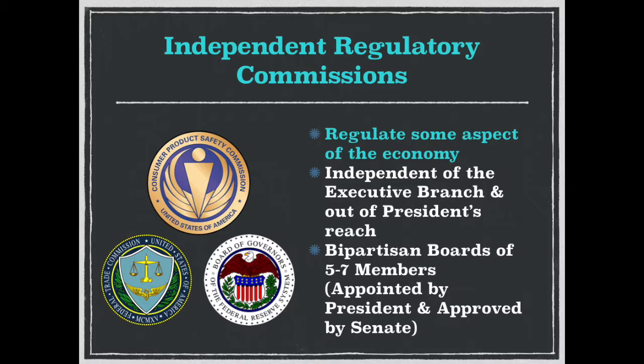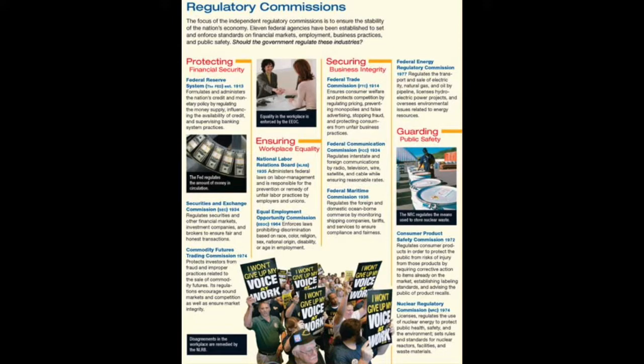The independent regulatory commissions stand out among the independent agencies because they are largely beyond the reach of presidential direction and control. These 12 commissions were created to monitor and police important aspects of the nation's economy. Most are headed by boards of five to seven members appointed by the president and approved by the Senate, but they're mostly out of reach of the president. Well-known examples include the Federal Trade Commission, the Consumer Product Safety Commission, and the Federal Reserve System.